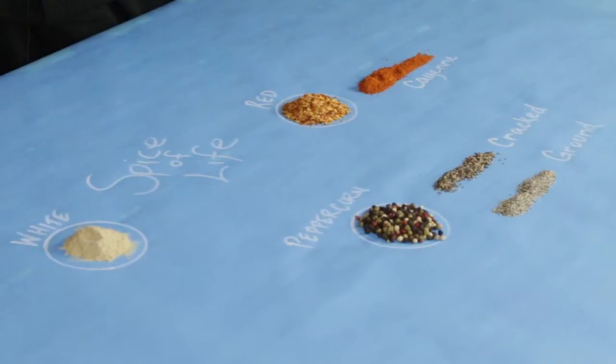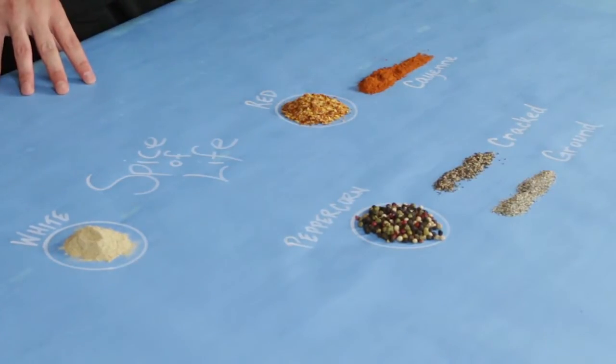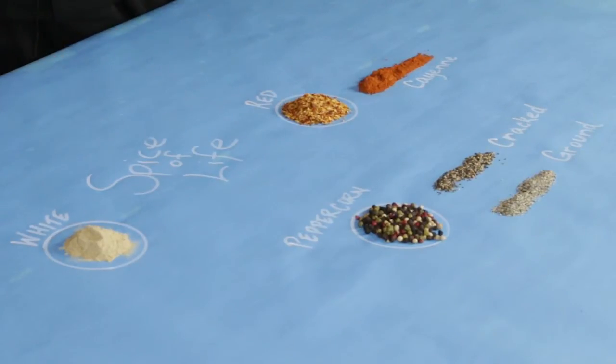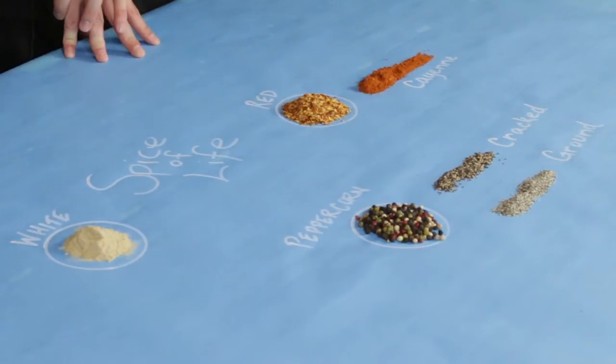When would I choose white pepper over black pepper over red pepper? White pepper is a little more aesthetically pleasing in certain situations. Imagine you're making creamy mashed potatoes and you put cracked black pepper in — you're going to see all those black flakes. So you really want to go with white pepper in that instance. That's it for the spice of life — catch us next time.